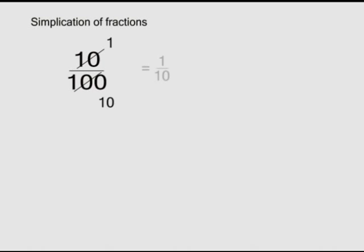Next, simplification of fractions. A fraction should be written in the simplest way possible, so the numerator and denominator should be simplified as much as possible. For instance, ten over a hundred can be simplified by dividing both the numerator and the denominator by ten, giving us one over ten. Equally, six over fifteen can be simplified into two over five by dividing both numerator and denominator by three.